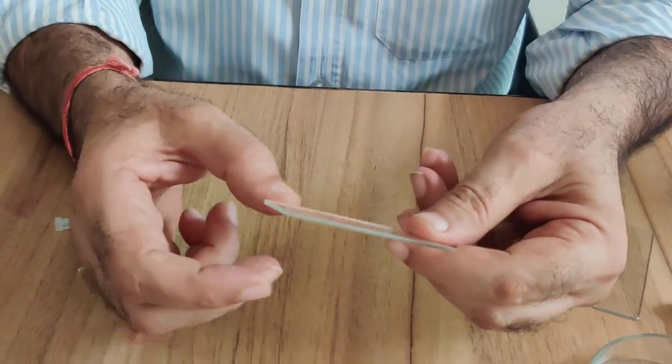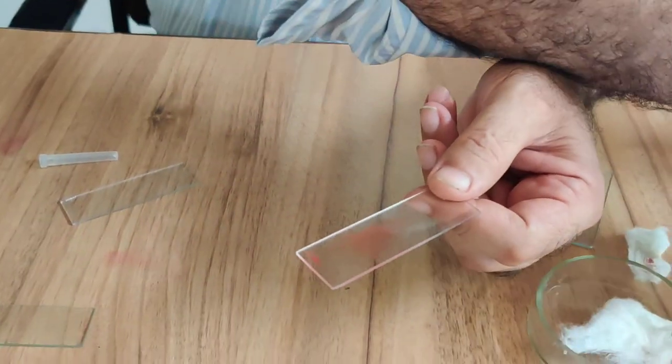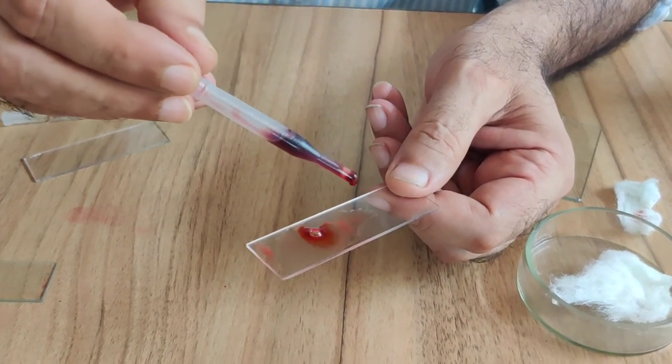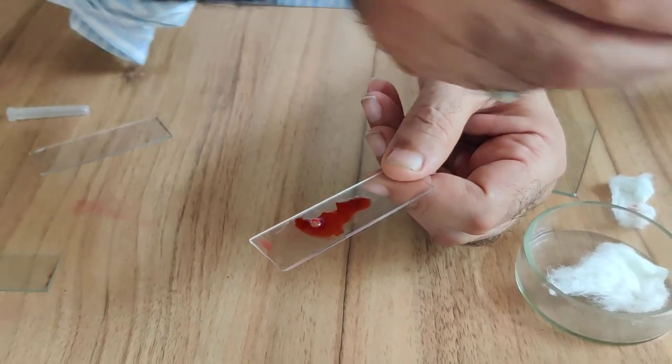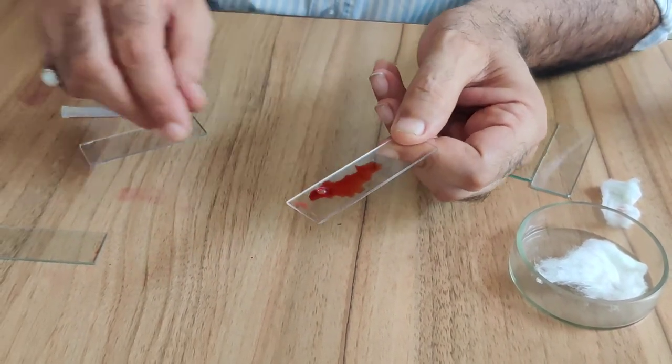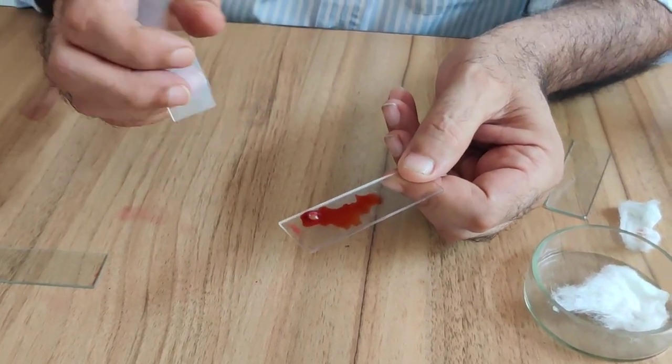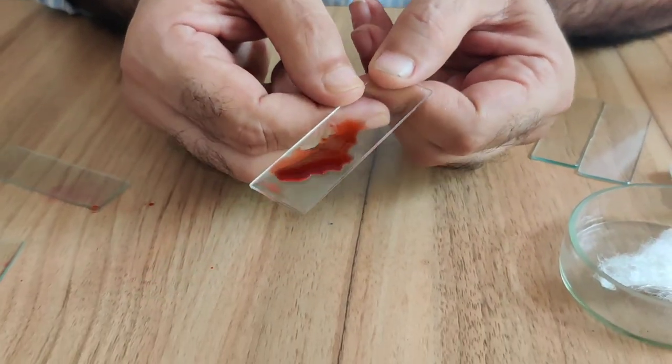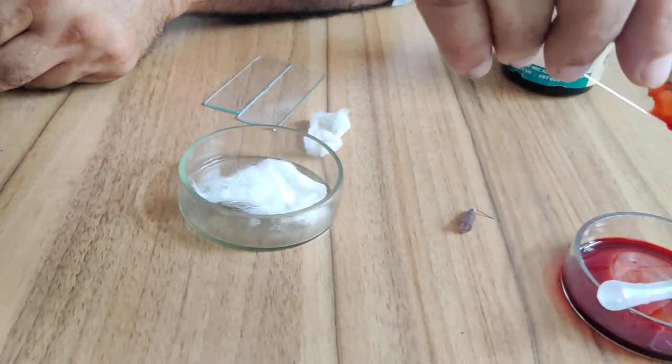Make it somewhat dry. Put a few drops of Leishman's solution here. Make it dry. Remove the bubble. Then remove the extra stain.